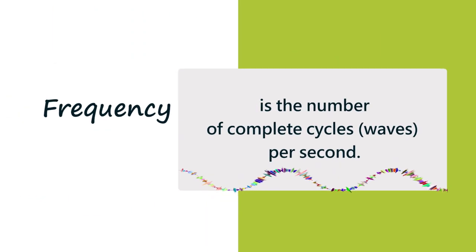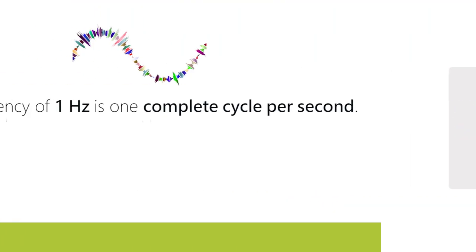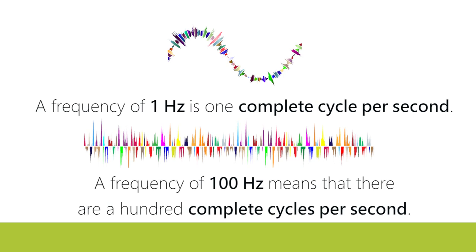Frequency is the number of cycles of wave per unit of time, usually seconds, and frequency is measured in hertz. A frequency of one hertz means there is one complete cycle per second. A frequency of 100 hertz means there are 100 complete cycles of the wave per second.